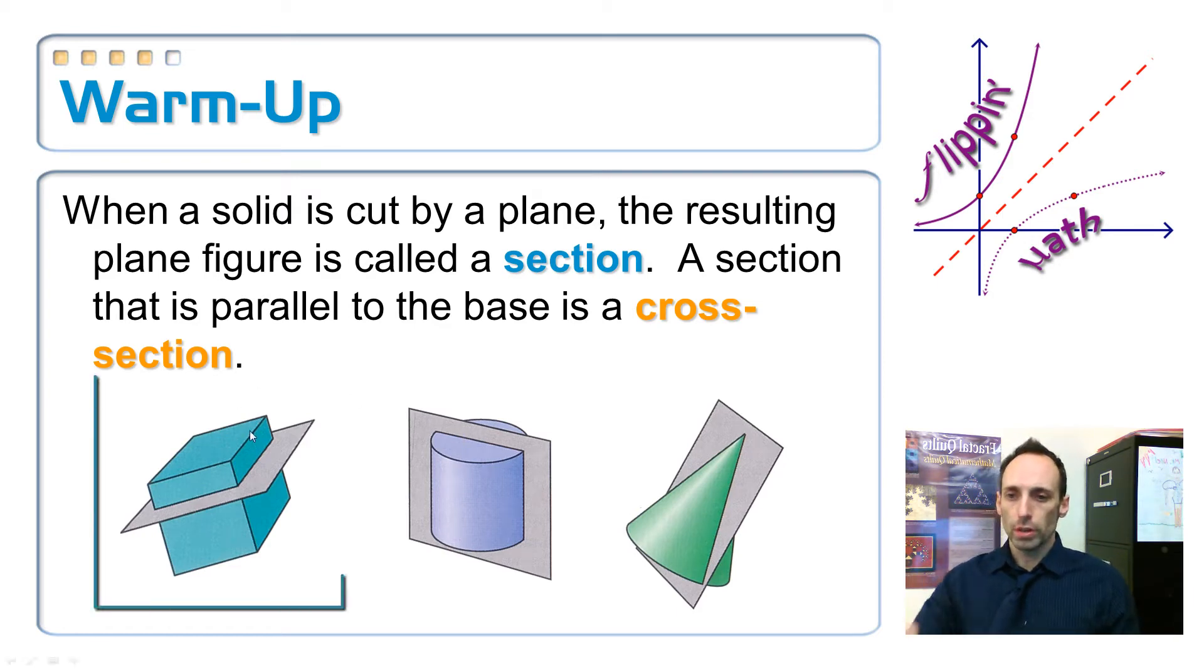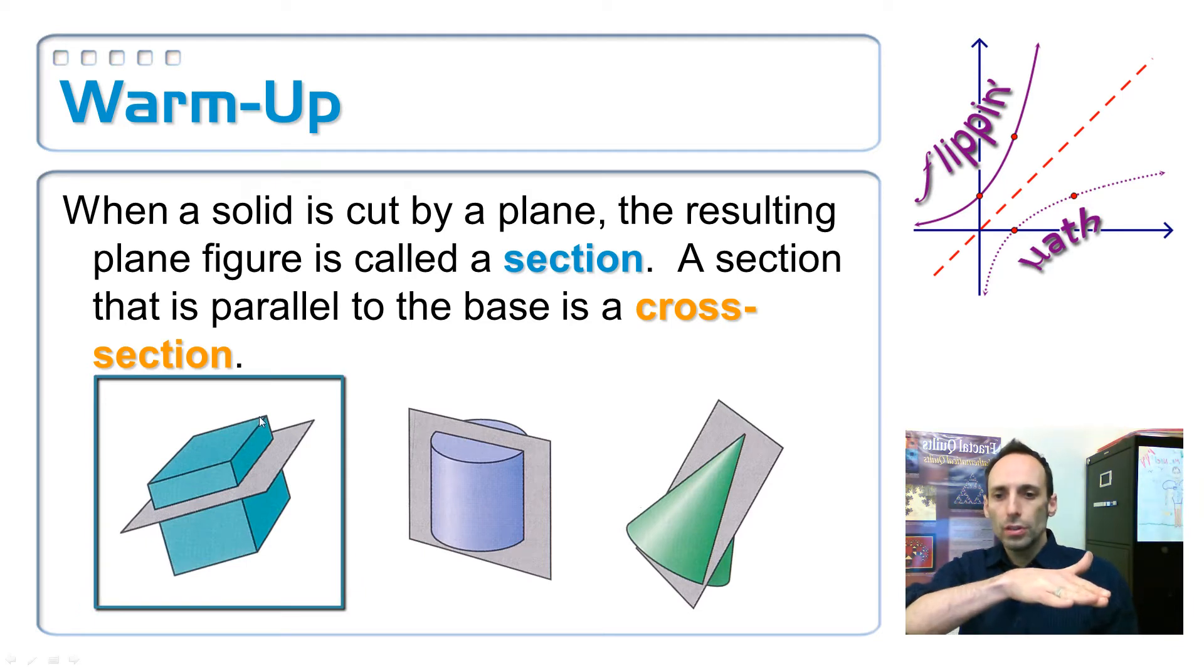Now in science class, you're used to probably drawing cross-sections of cells, things like that. A cross-section in geometry is a section that's just made parallel to the base. So look at the first one here. You've got a cube, and you've got the plane. It's going parallel to the base. What shape is going to be left on that plane? What two-dimensional shape is going to be left on the plane? Of course, it is a square. And this one is a cross-section, okay, because it's parallel to the base.